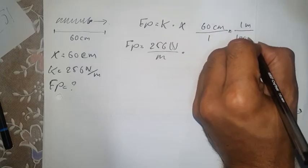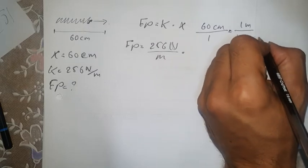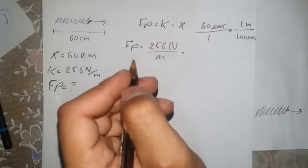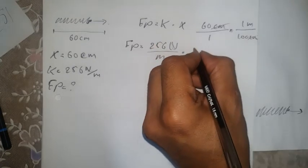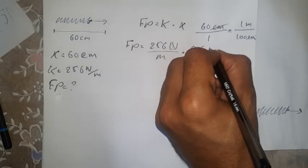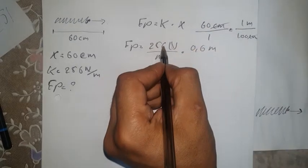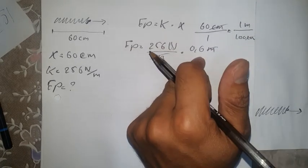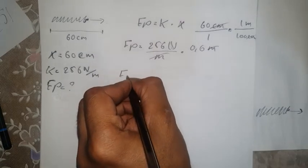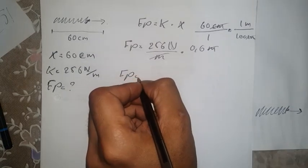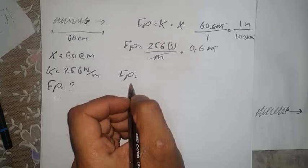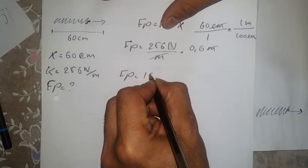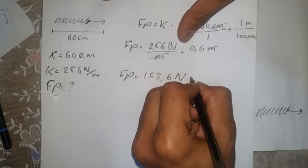We convert by multiplying 60 centimeters by 1 meter divided by 100 centimeters. The centimeter units cancel, giving us 0.6 meters. Now we multiply 0.6 by 256, and the meters cancel with meters. The final answer is 153.6 newtons.